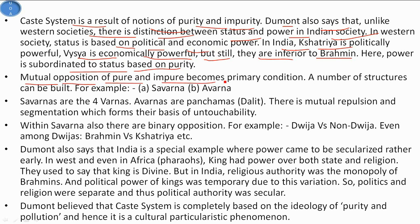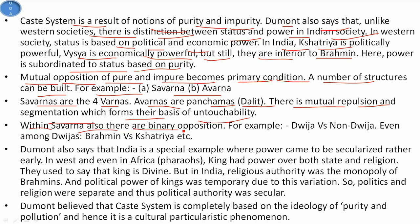The mutual opposition of pure and impure becomes the primary condition from which a number of structures can be built. For example, Savarna — the four Varnas — and Avarna, the Panchamas or Dalits. Mutual repulsion and segmentation form the basis of untouchability. Within Savarnas also there are binary oppositions: Dwija versus non-Dwija; and even among Dwijas, Brahmin and Kshatriya — since both Brahmins and Kshatriyas perform the sacred thread ceremony, the Upanayana Sanskar.